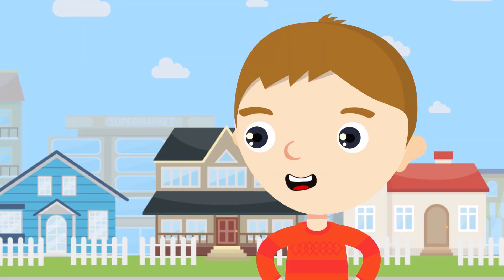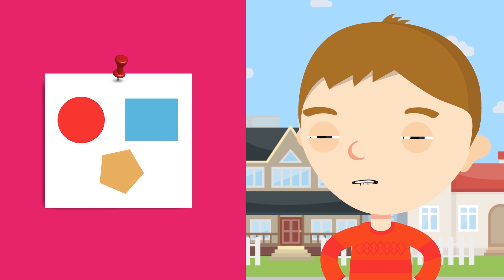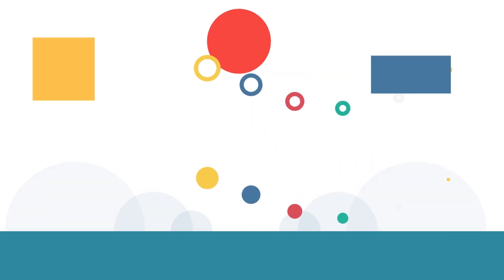2D shapes are what we call flat shapes that are completely flat, like drawing on a sheet of paper. Let's go and see if we can meet some of these shapes.